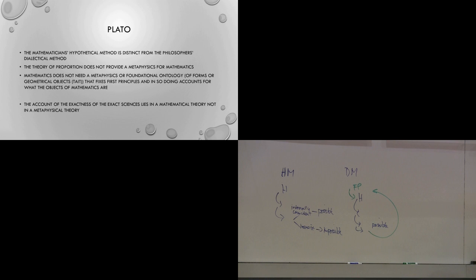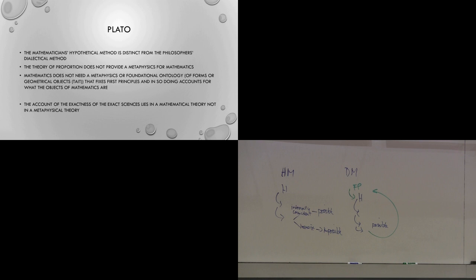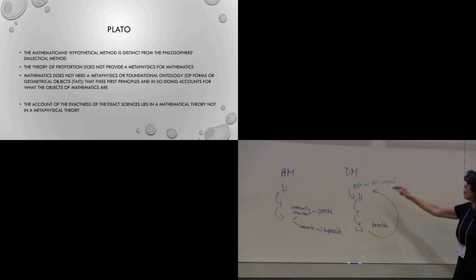What you have to do is you have to travel back upwards to some first principle, and that first principle provides an account of your hypothesis. Many people have argued that the mathematician is supposed to undertake the dialectical method, and if that's the case, we require first principles — a stable domain of objects, these forms — and they're going to provide our first principles, or our account, of our hypothesis. What this account does is it provides fixity to your objects.